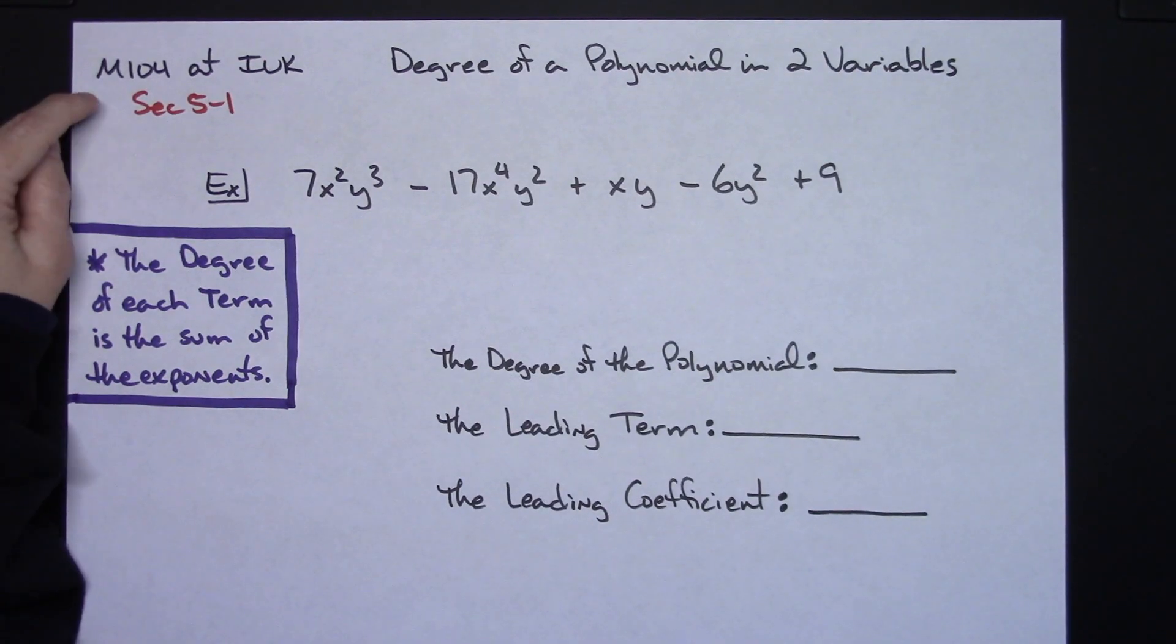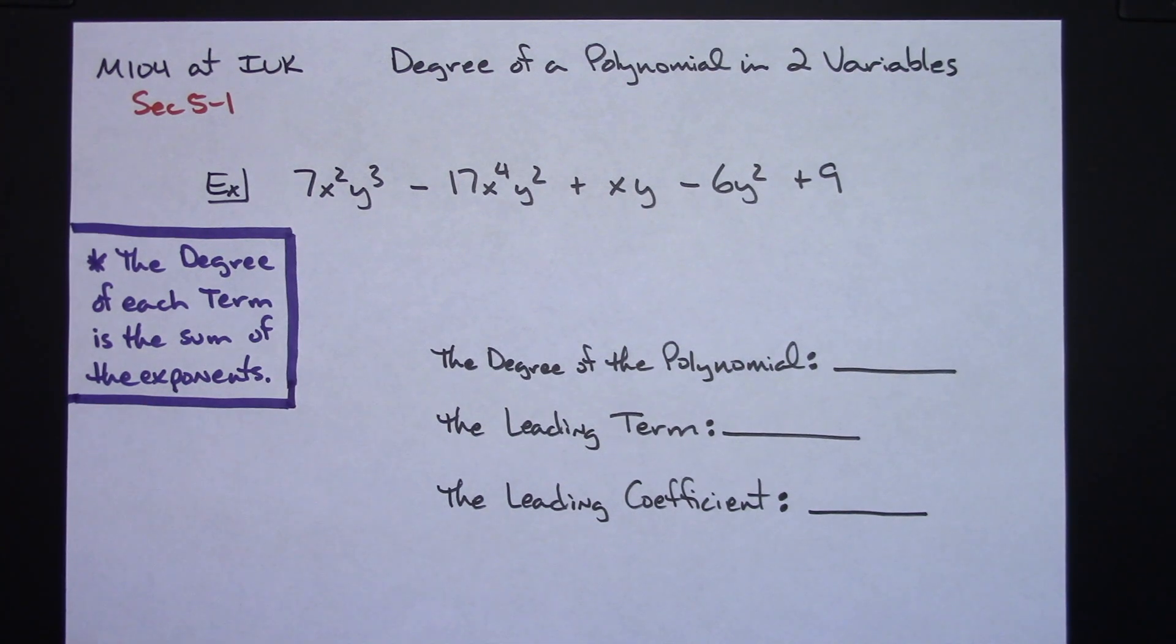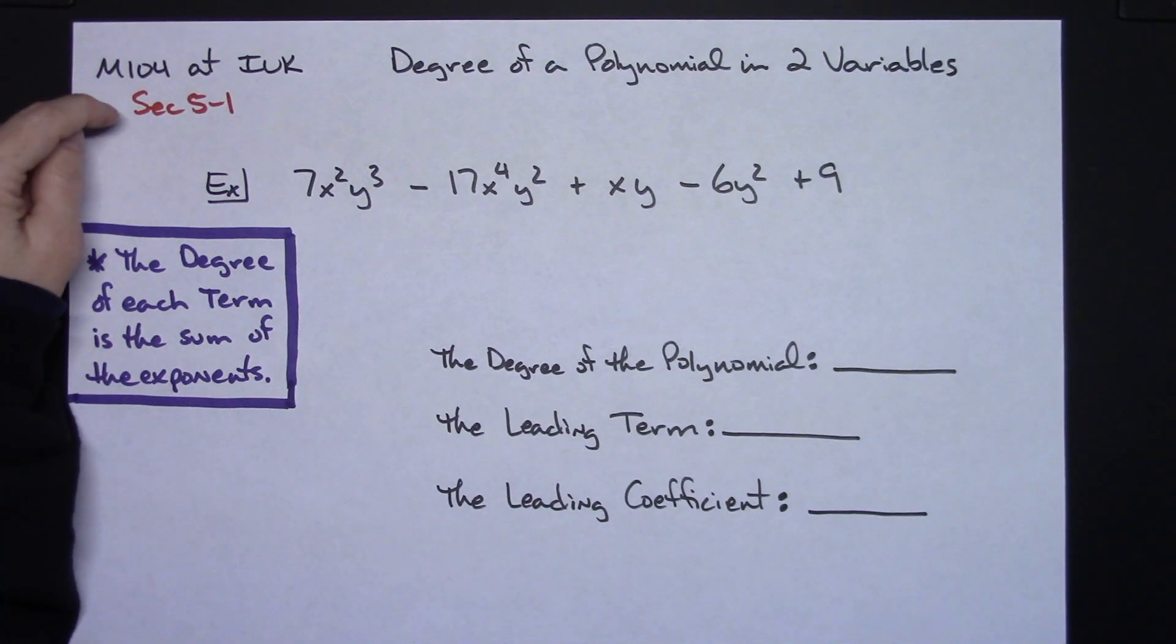In this video I'm going to be specifically making it for my M104 classes at IUK. We're going to take a look at the degree of a polynomial that is written in two variables. This would be one of the topics that you're going to find in section 5-1.